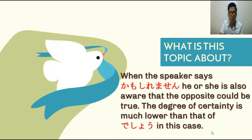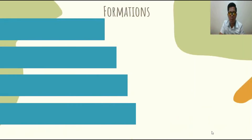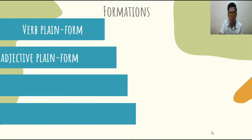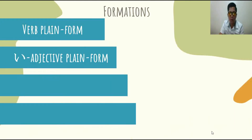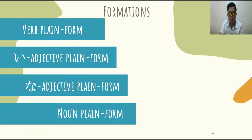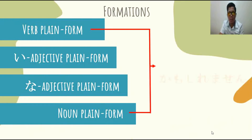Mas malaki yung maaaring hindi mangyari. Ito yung magiging formations niya. First, sa verb, kailangan naka-plain form. Then for i-adjective, kailangan naka-plain form din. Then, na-adjective, plain form din. Ganun din sa noun. So, kailangan lahat naka-plain form, then plus Kamo Shirimasen.